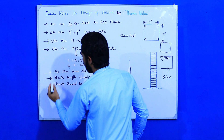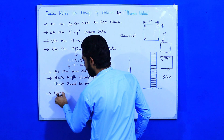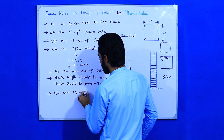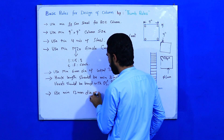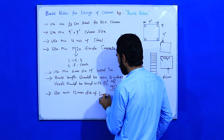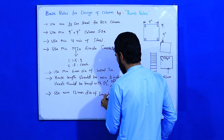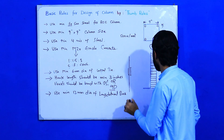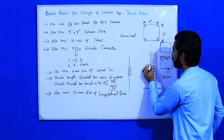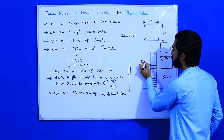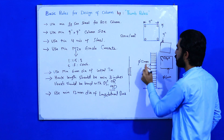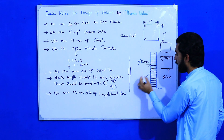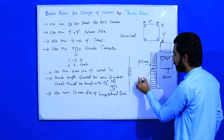For longitudinal bars, use a minimum 12 millimeter diameter. The longitudinal bar diameter should be minimum 12 mm, and the lateral ties, as already discussed, should not be less than 6 mm.